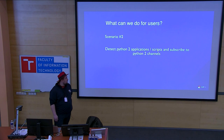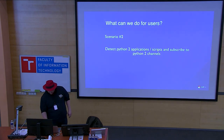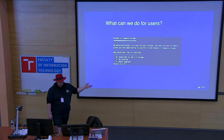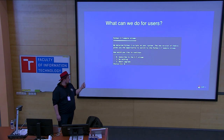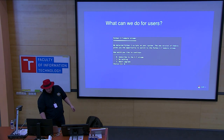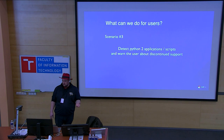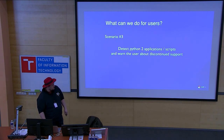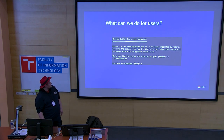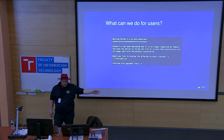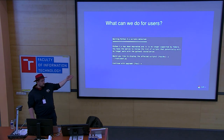Another scenario: detecting Python 2 application scripts and subscribing to the Python 2 module stream. The prompt could read: 'Python 2.7 module stream — we detected Python 2 scripts on your system. The new version of Fedora gives you the opportunity to switch to the Python 2.7 module stream.' The user can choose to subscribe to the stream, do nothing, or abort the upgrade. You could also detect these scripts and warn the user about discontinued support — Python 2.7 is no longer supported upstream — and even show where the files were found. Such scans would be very expensive on systems with many files.